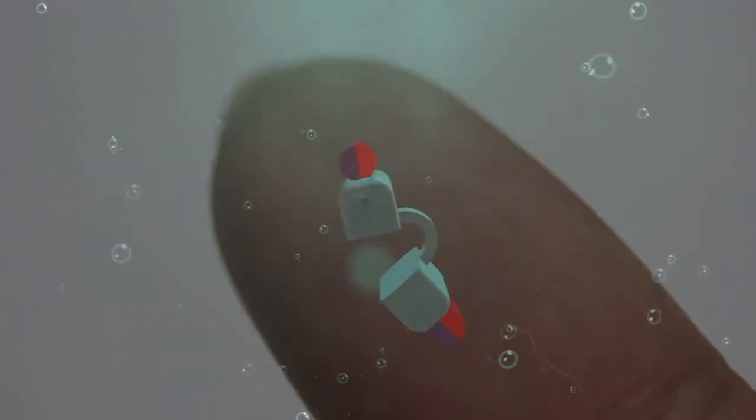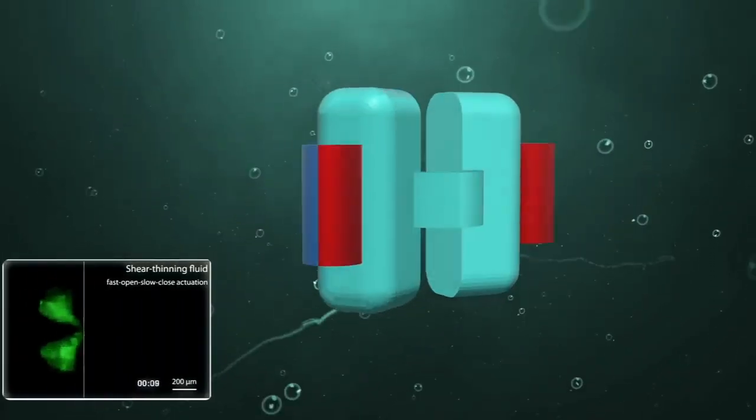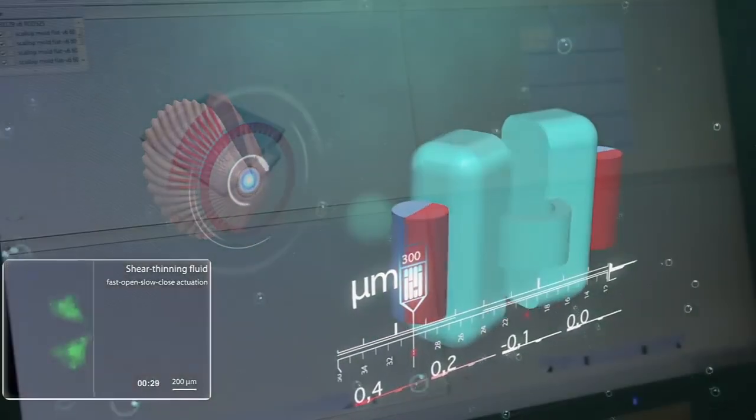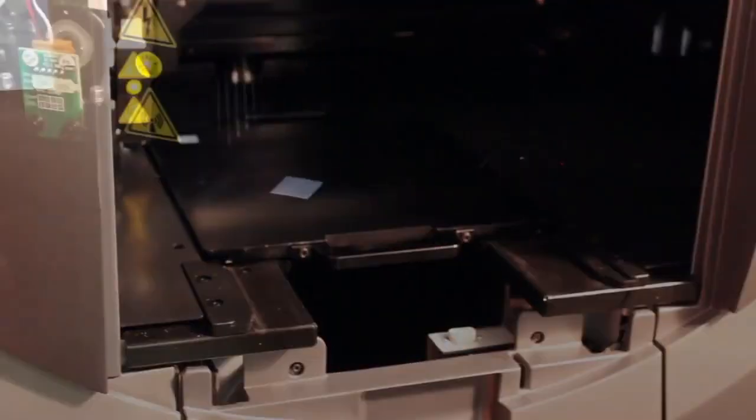Here is the micro swimmer that we built in the shape of a scallop. The width of the scallop is 300 micron. We made this by 3D printing and then micro molding technique.